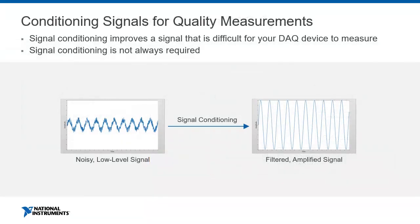Most sensors need some sort of external hardware to perform their job correctly. For instance, RTDs need an excitation current, which requires external hardware. Strain gauges need a configuration of resistors called a Wheatstone bridge. The external hardware required by most sensors for a DAQ device to appropriately read the signal is called signal conditioning. Not all transducers produce a perfect voltage — the signal could be noisy, too small for high resolution, or too large for the range of the DAQ device. Signal conditioning allows us to take a noisy, low-level signal and make it cleaner and more usable.